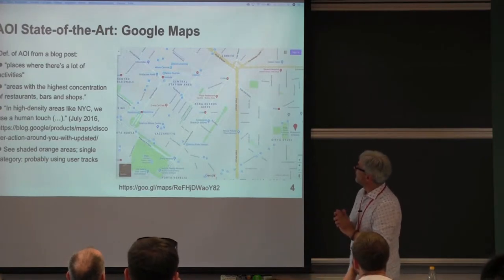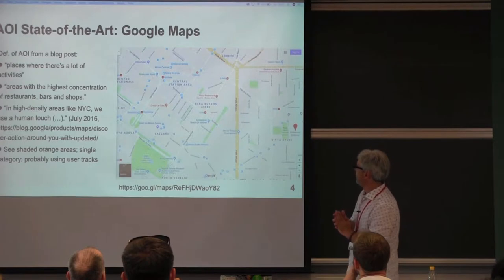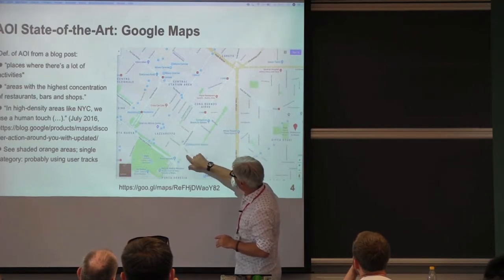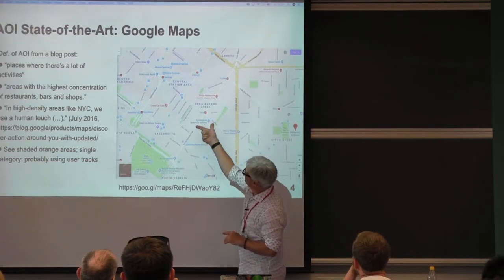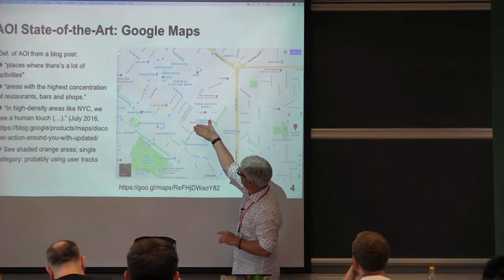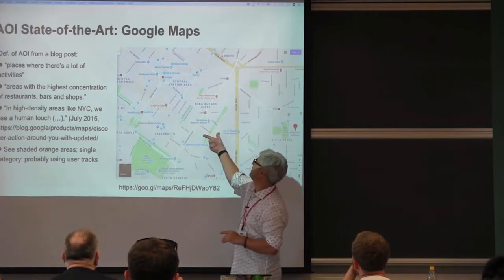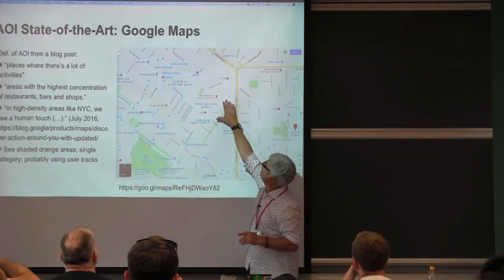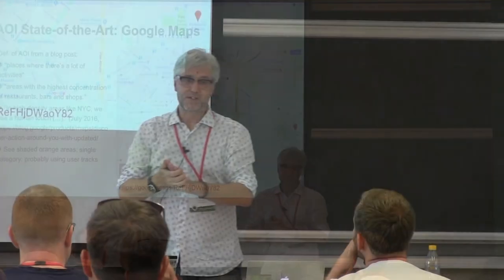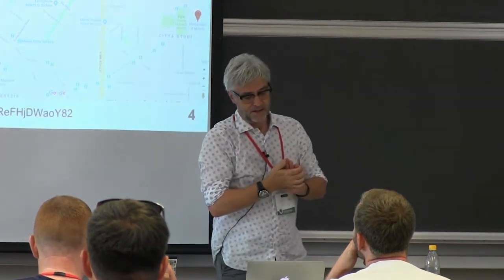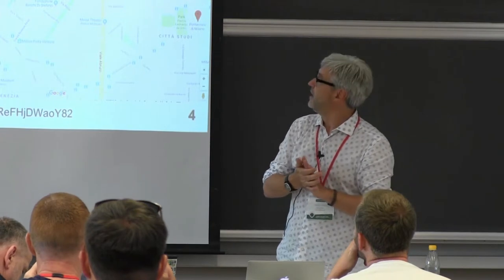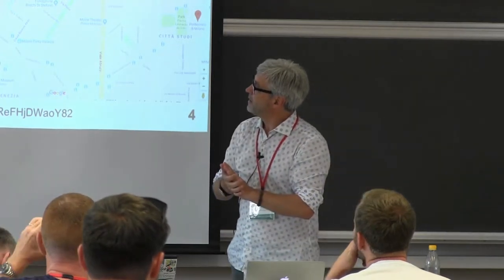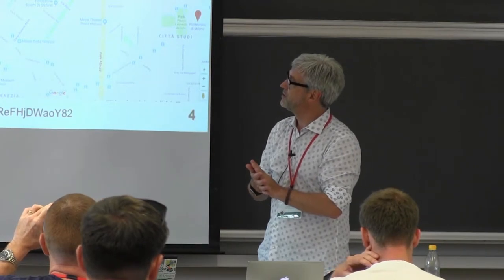This is how Google Maps looks like. Those orange shaded areas are, for example, around here — this is a building shaded as an area of interest, and this is not. Two years ago, a blog post from the Google Maps team defined it simply as places where there are a lot of human activities — areas with the highest concentration of restaurants, bars and shops.